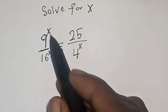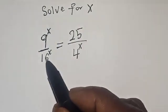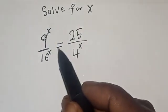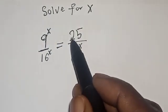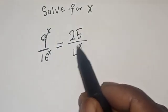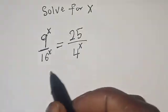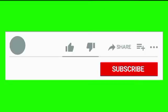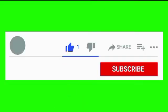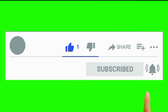9 raised to power x divided by 16 raised to power s is equal to 25 divided by 4 raised to power x. But before we proceed, please don't forget to like, share, comment and subscribe. Thank you.